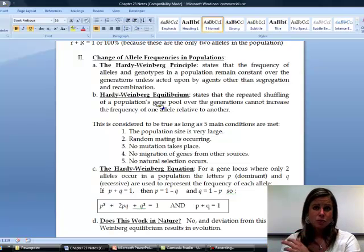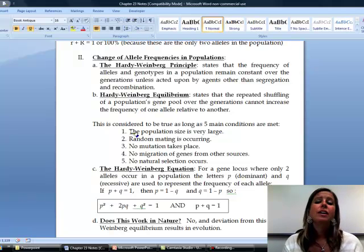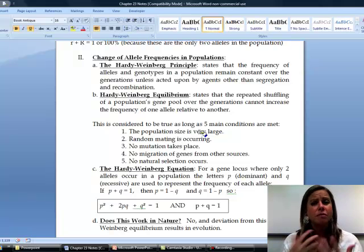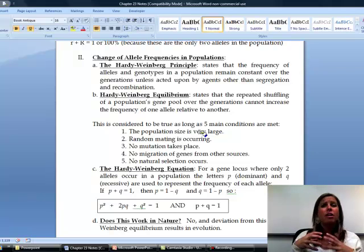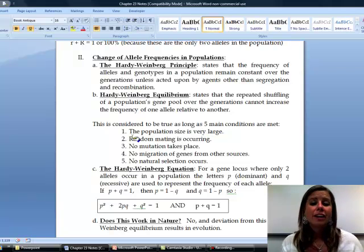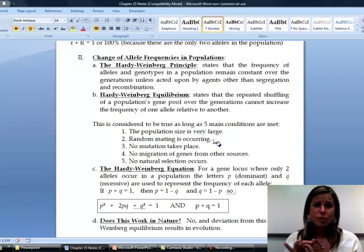Now, in order for that to be true, there are five conditions that have to be met for that population. So the first one is that the population size has to be very large. Now, obviously, that's going to be different if you're talking about ants versus elephants or something like that. The numbers are going to be different, but very large is going to be important. You cannot have a small population. Next thing is that random mating is occurring, and so what that means is that you have to not really be able to see a pattern on who is mating with who.